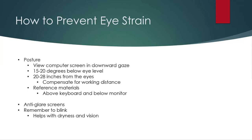Reference materials: if you're copying from a book or paper to your computer, make sure that reference material is above your keyboard but below your monitor. This prevents neck movement back and forth, allowing you to focus on eye movement only — just moving your eyes to copy from the reference material to the screen. This really limits how often you have to move your neck and therefore reduces strain. Also, use anti-glare screens and remember to blink — make sure you're coating the surface of your eye constantly with lubrication from your tears to prevent dryness and keep vision sharp.